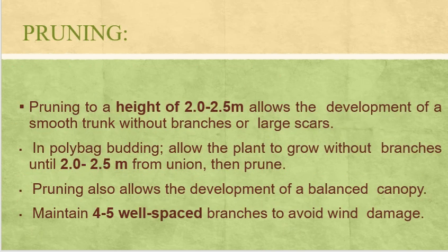Regarding pruning, pruning to a height of 2 to 2.5 meters allows the development of smooth trunks without branches or large scars. In polybag budding, allow the plant to grow without branches until 2 to 2.5 meters from the union and then prune. Pruning also allows the development of a balanced canopy; maintain 4 to 5 well-spaced branches to avoid wind damage.